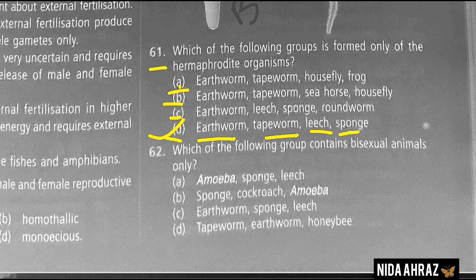Which of the following groups contains bisexual animals only? The options include amoeba, sponge, leech, cockroach, earthworm, and others. The correct choice is option C: earthworm, sponge, leech.